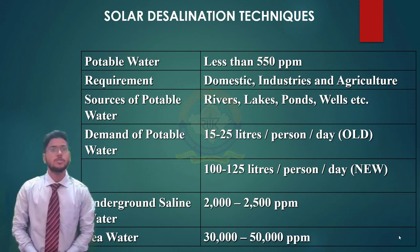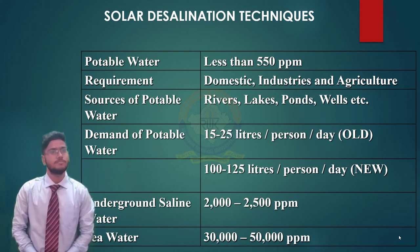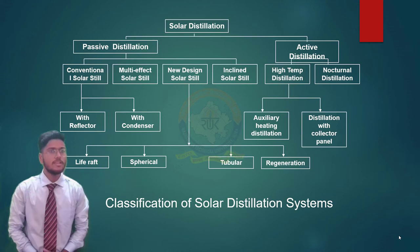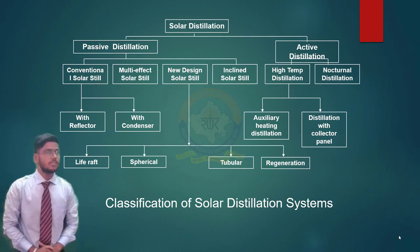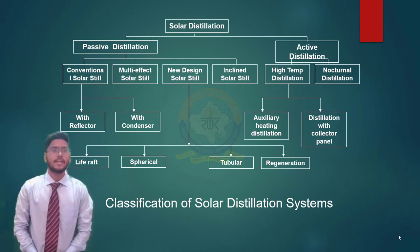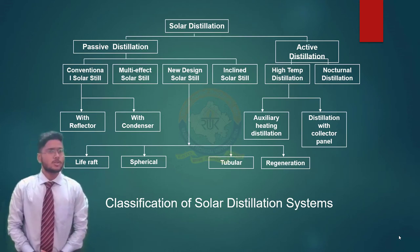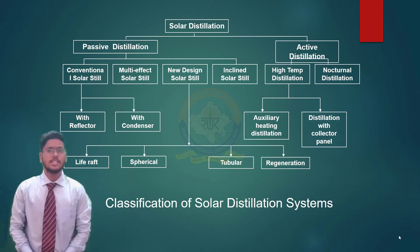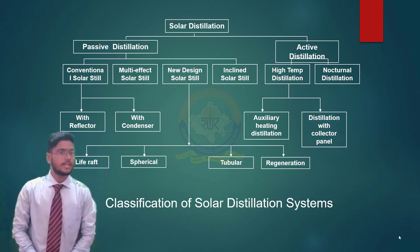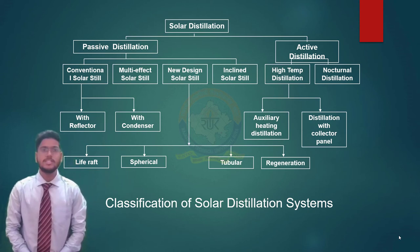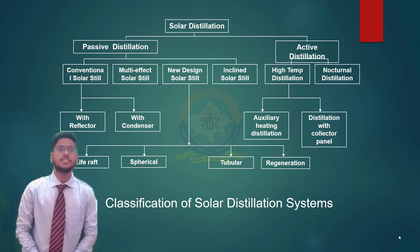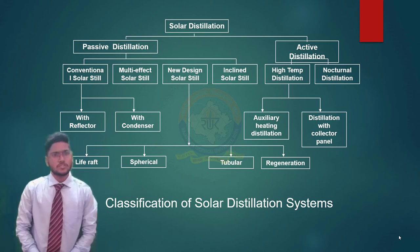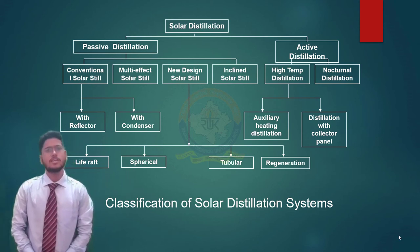Potable water should not contain dissolved salts more than a specified limit. The classification of solar distillation is shown in the diagram. Solar distillation is classified into two categories: the first one is passive distillation and the other one is active distillation, which is further divided into several categories.